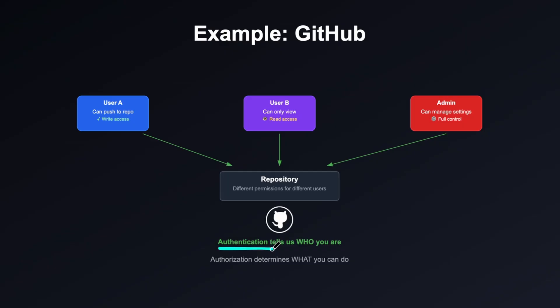Authentication happens first, which tells us who the user is and whether they are allowed to access our system. On the next step we have authorization, which determines what you can actually do as a user in this system.